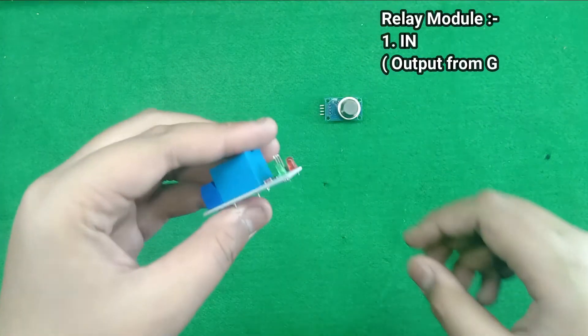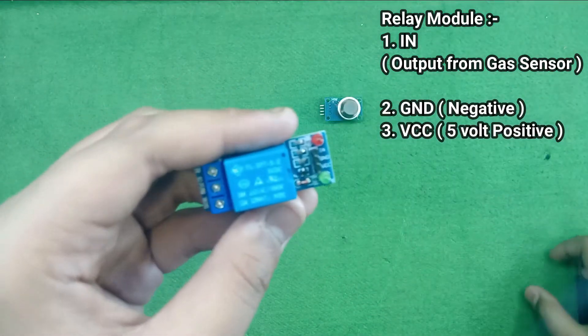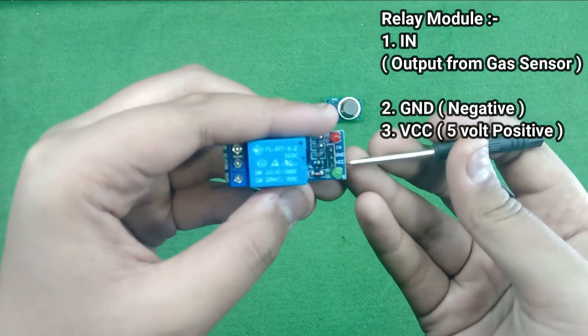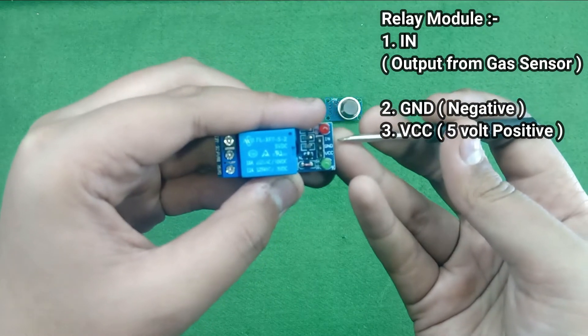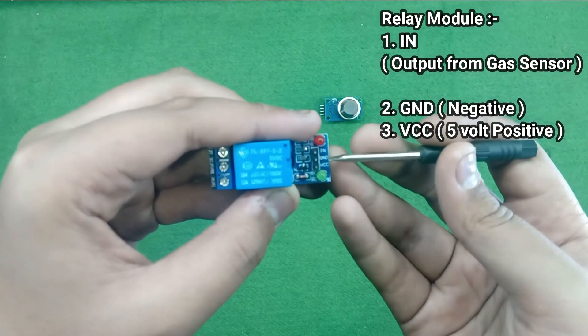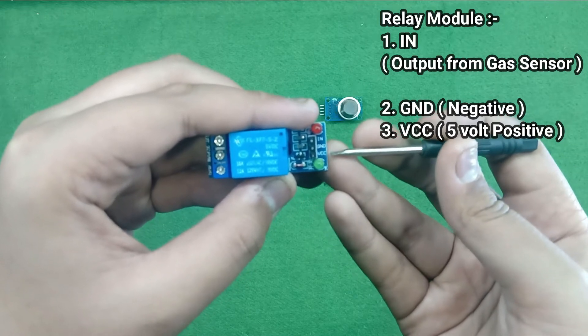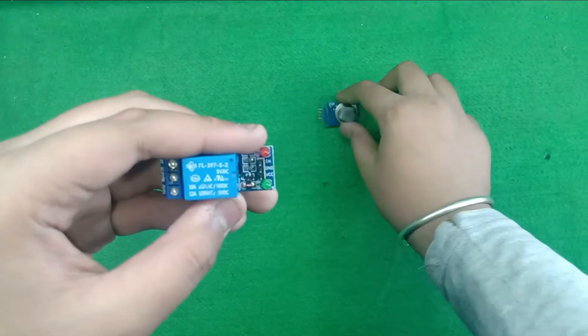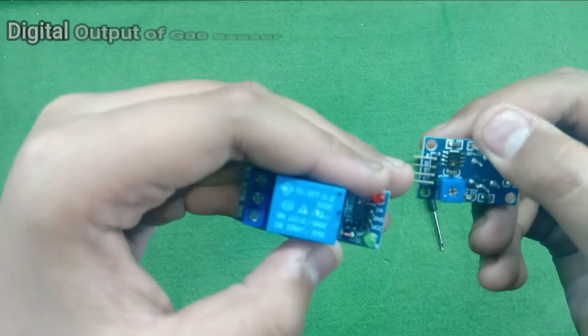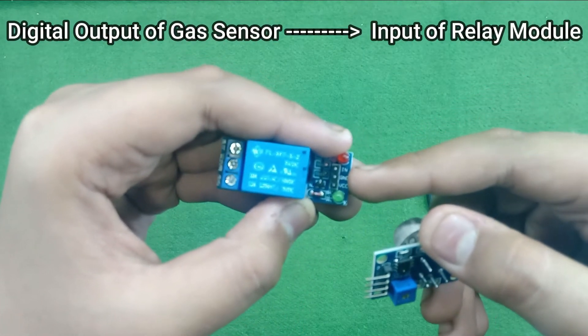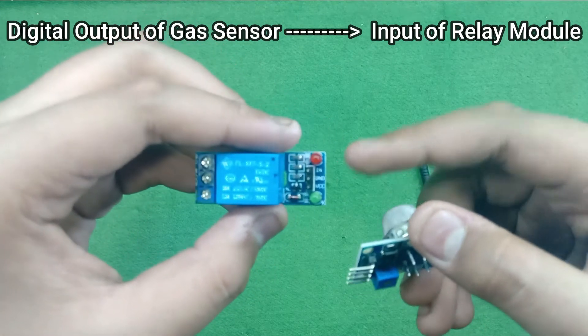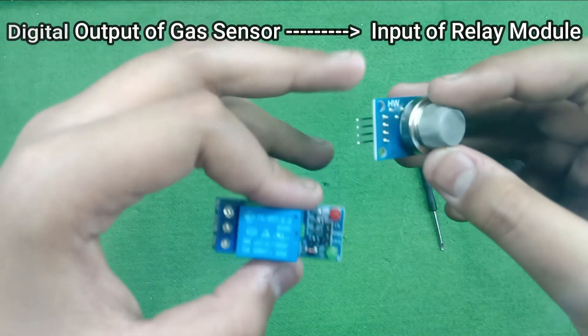Then in relay module, here are total three pins, 1, 2, 3, the first one is input, second one is ground and third one is positive. The digital output of this MQ sensor is given to the input of relay module, so that relay module works on the basis of this MQ sensor.